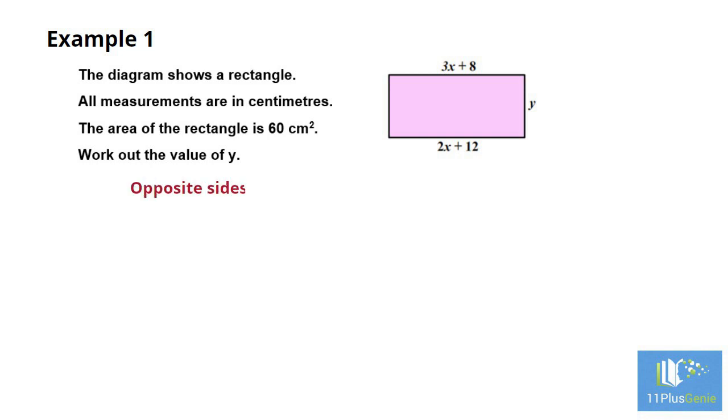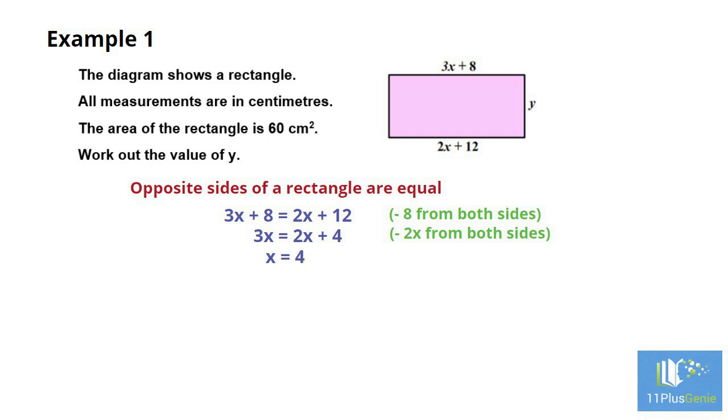Opposite sides of the rectangle are equal. We have that 3x plus 8 equals 2x plus 12. We subtract 8 from both sides to get 3x equals 2x plus 4. Now subtract 2x from both sides to simplify to x equals 4.